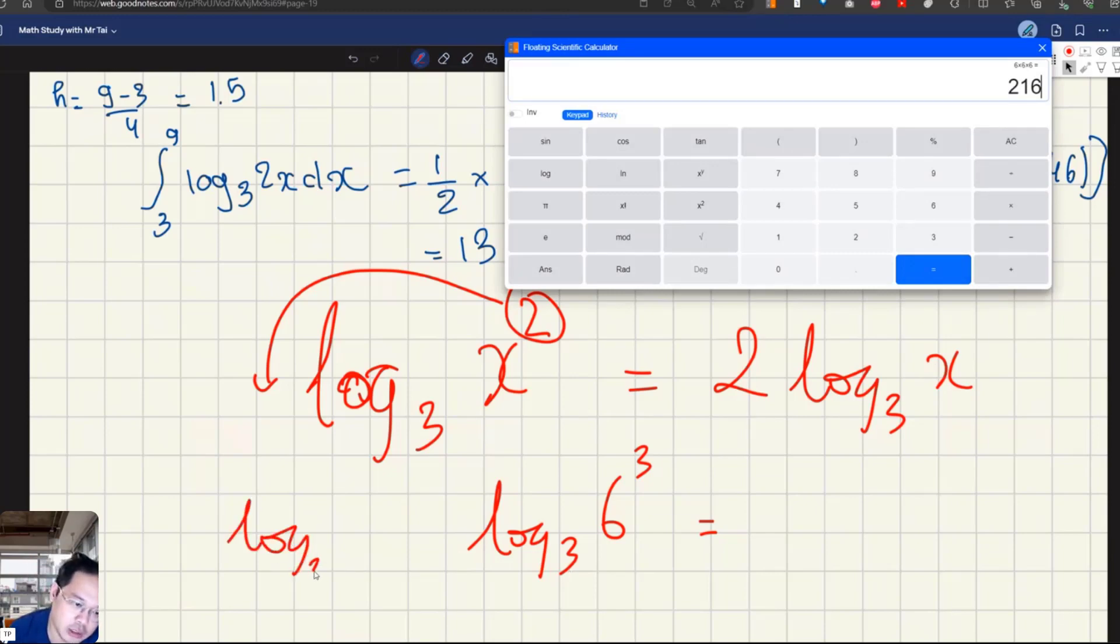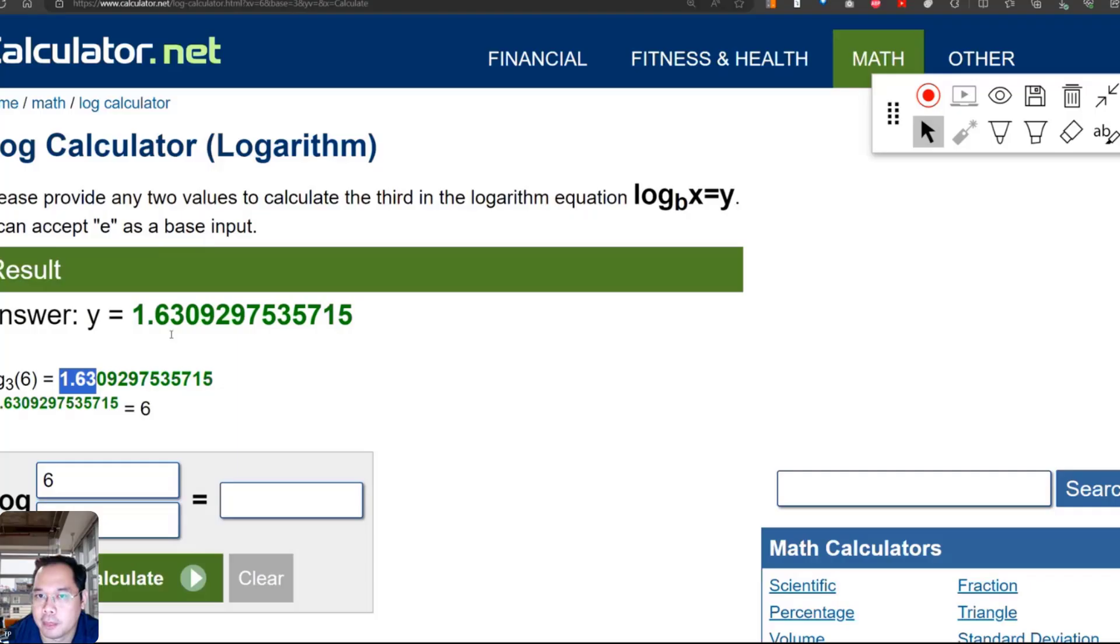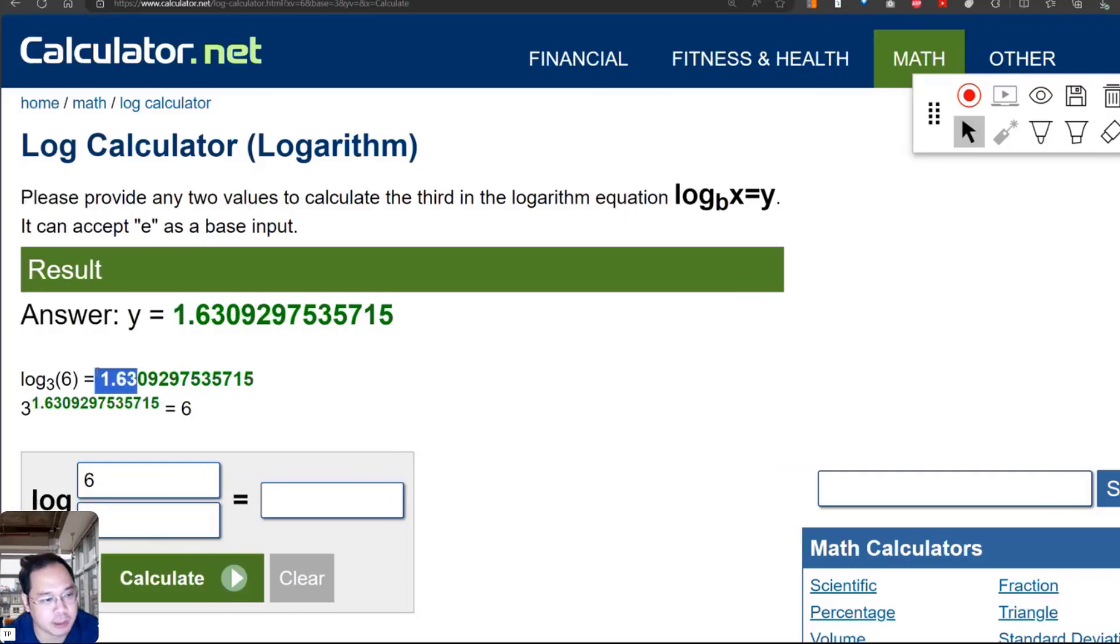Logarithm base 3 of 216, we can completely bring the 3 down to make it 3 times logarithm base 3 of 6. If you don't believe it, use the calculator. Log base 3 of 6 equals 1.63. Remember the number 1.63.